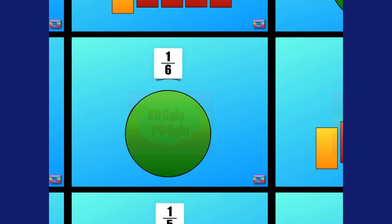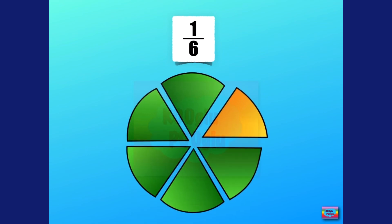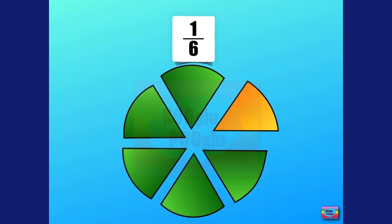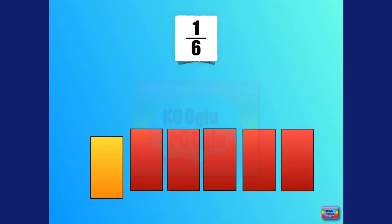Here we have one sixth. Oh, this looks like a pizza! And here every part is one sixth. That means one whole is divided into six parts. Again, chopping up the chilies.